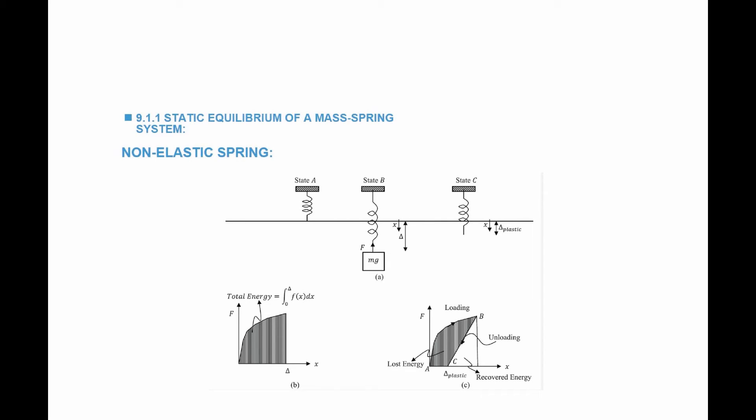The last condition we will mention but not study further is the case of a non-elastic spring — a spring that absorbs energy but does not release it, with the energy representing a form of damage after removal of the load. For example, at a load mg, the spring extends by delta. After removing the load, the spring does not return to its original position; there is residual damage. Looking at the force versus displacement curve, the area representing stored energy minus the residual extension area equals the lost energy — the energy that went into damage of the spring.